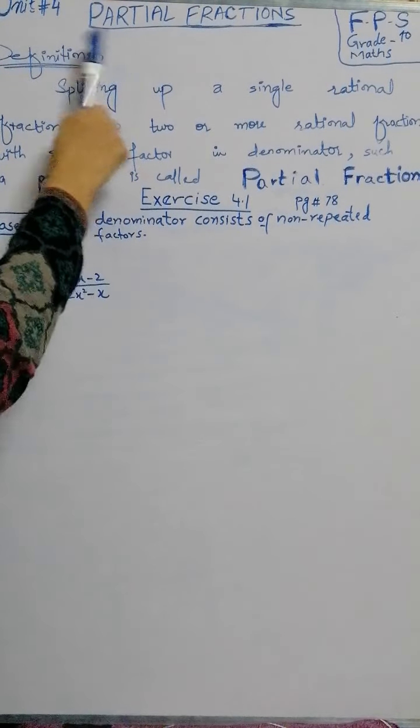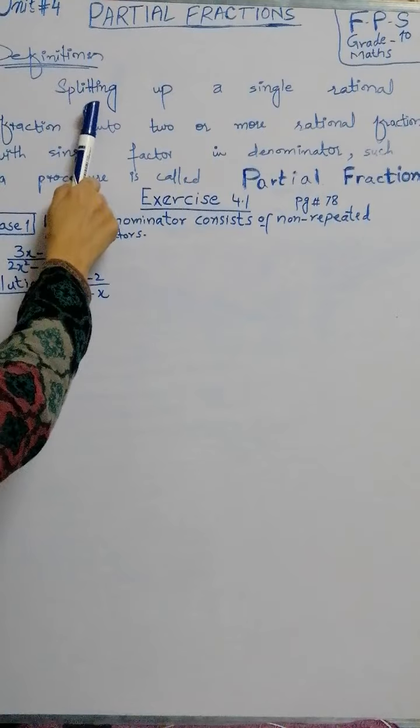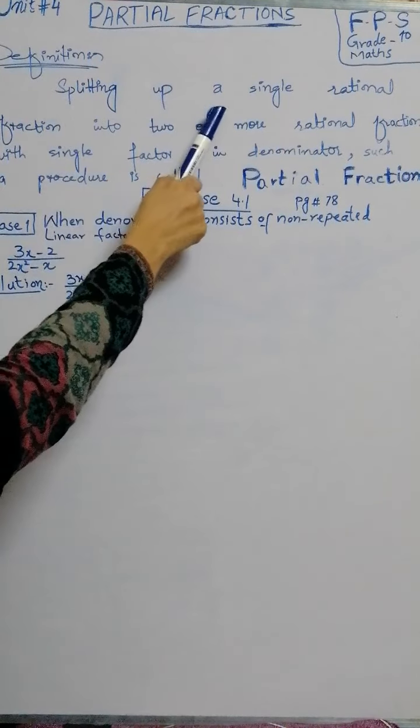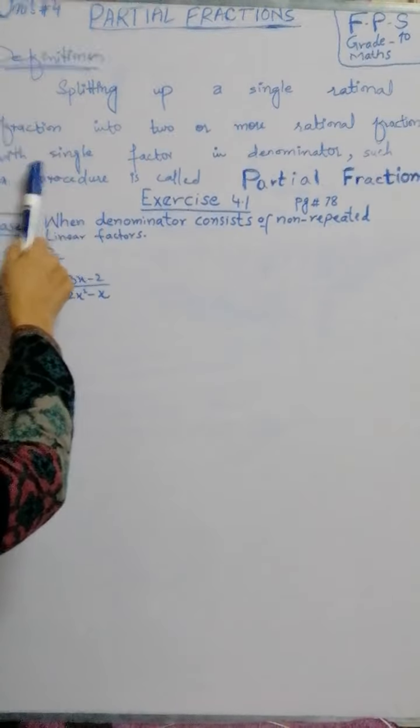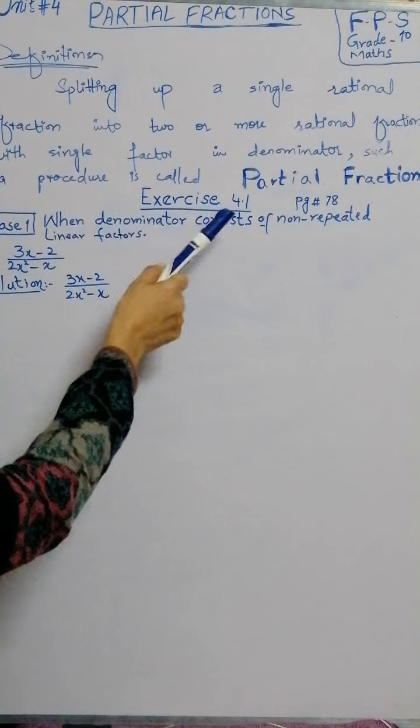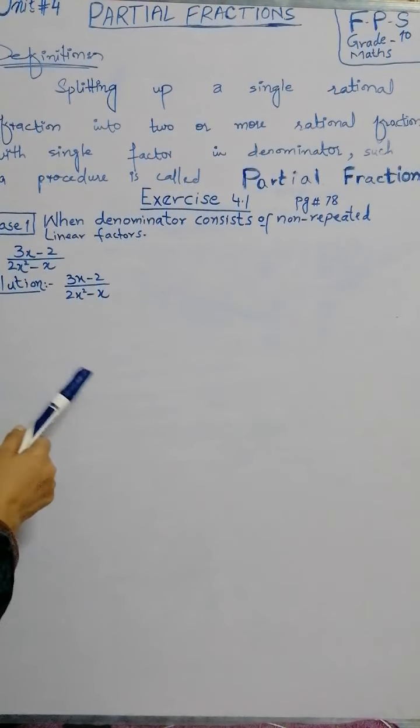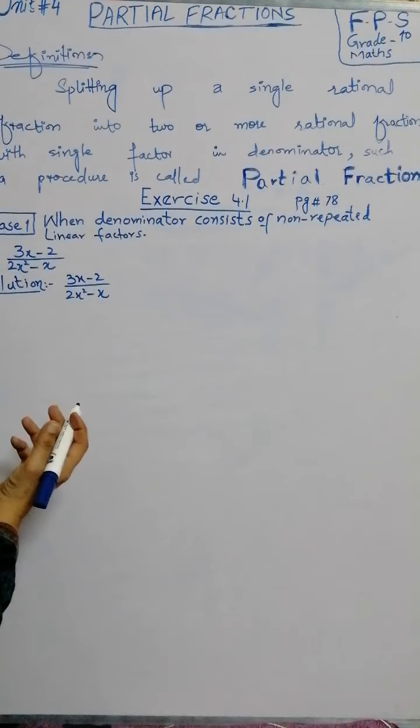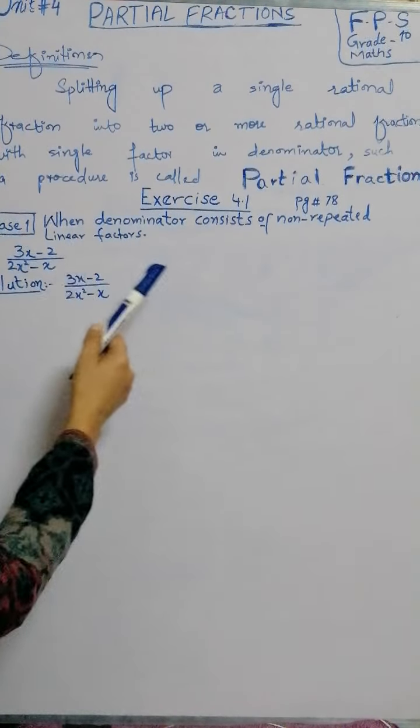Today we are starting partial fractions, unit 4. Here is the definition: splitting up a single rational fraction into two or more rational fractions with single factors in the denominator. Such a procedure is called partial fraction. If you have a single fraction and you resolve it into two or more fractions, this procedure is partial fraction.